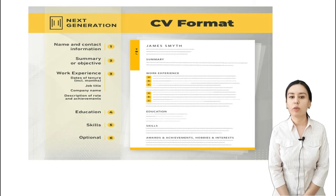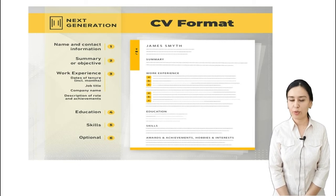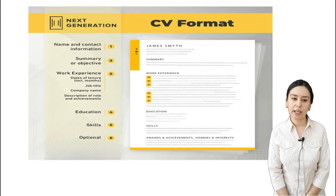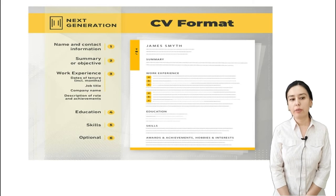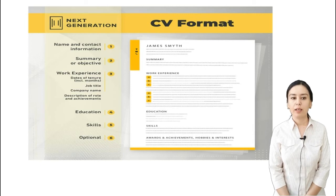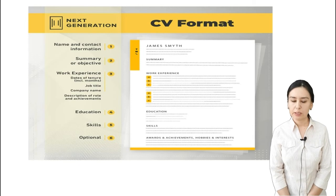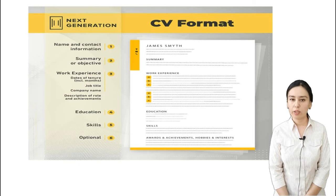Now the last part is dedicated to writing a CV. What is a CV? A CV is detailed information about a person; usually when someone applies for a job, they are asked to bring this document. Usually at the beginning you include your name and contact information — for example, 'James Smith' — plus your telephone number or email. Next is the summary or objective section, where you write why you are applying for the job, what you plan to do, and what benefit you can bring to the workplace.